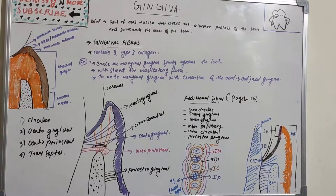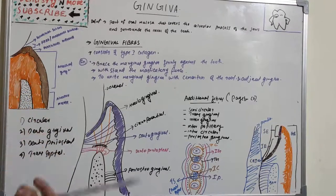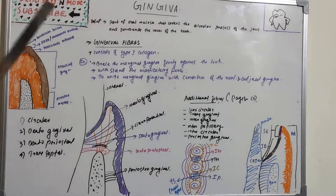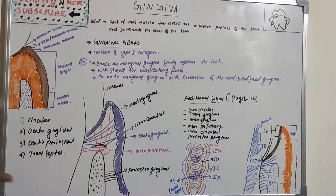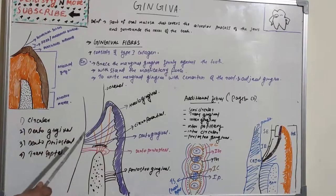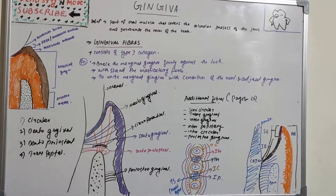Gingival fibers are collagen fiber bundles seen in the connective tissue of gingiva, known as gingival fibers. They are basically type 1 collagen. The connective tissue of marginal gingiva is densely collagenous and contains a prominent system of collagen fiber bundles. Their functions are to brace the marginal gingiva firmly against the tooth, to provide rigidity to withstand masticatory forces without being deflected away from the tooth surface, and to unite the free marginal gingiva with the cementum of the root and adjacent gingiva.